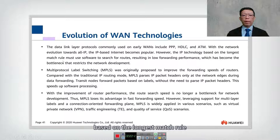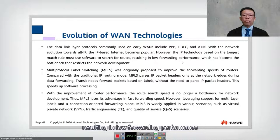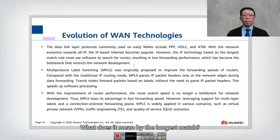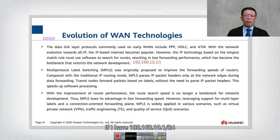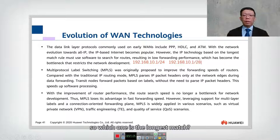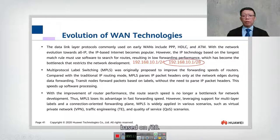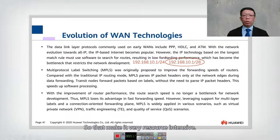However, internet technology based on the longest match rules must use software to search for routes, resulting in low forwarding performance, which has become a bottleneck restricting network development. For example, comparing 192.168.10.1/24 versus 192.168.10.1/28 — the longest match is /28. This means the router needs to look up the IP address in the routing table, making it very resource intensive.